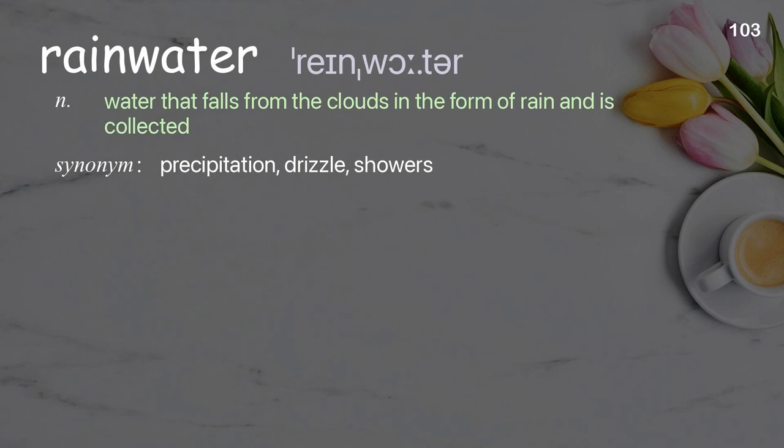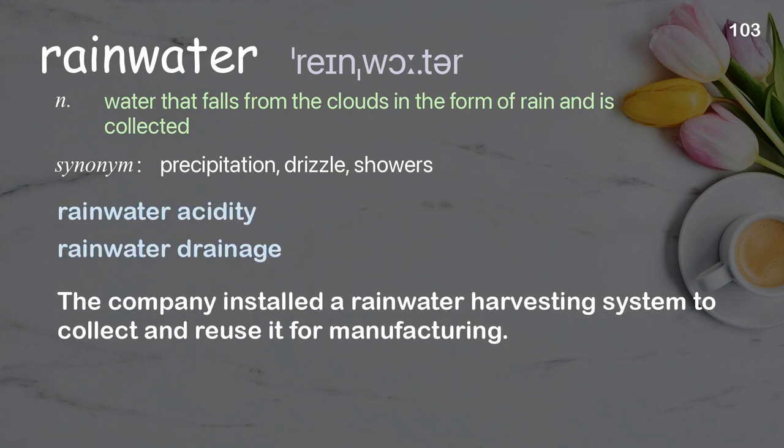Rainwater: water that falls from the clouds in the form of rain and is collected. The company installed a rainwater harvesting system to collect and reuse it for manufacturing.